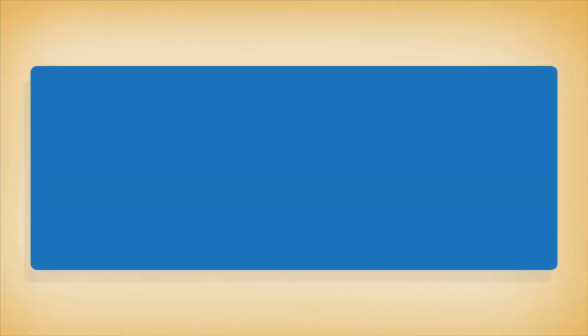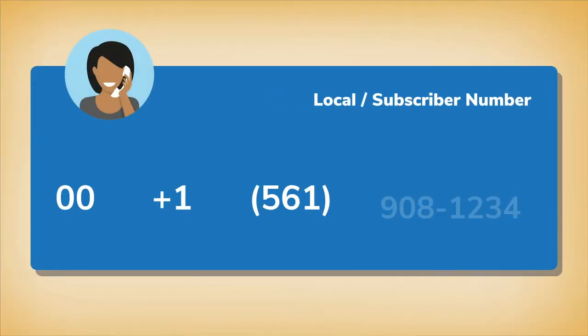Finally we have the local number, also known as a subscriber number. This is the phone number associated with the person or office you're calling. Once you input your destination's local number after the area code, you're finished dialing.